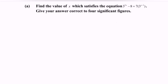Referring to the question: find the value of x which satisfies the equation where we have 3 to the power of 2x minus 8 equals 7 multiplied by 3 to the power of x minus 1. Give your answer correct to 4 significant figures.